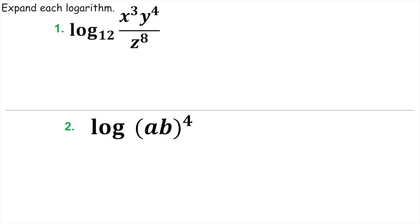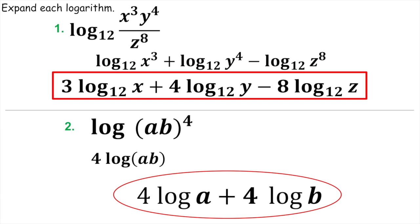These get a little bit more confusing — take them one step at a time, break each one apart. First thing I did is break the x and y apart with my addition, because x cubed times y to the fourth is being multiplied. Then z to the eighth is on the bottom, so that's where the subtraction comes in — minus z to the eighth. Then I moved the three out in front, the four out in front, and the eight out in front. If I had z to the eighth and an m on the bottom, it would be minus log base twelve of m minus log base twelve of z to the eighth.